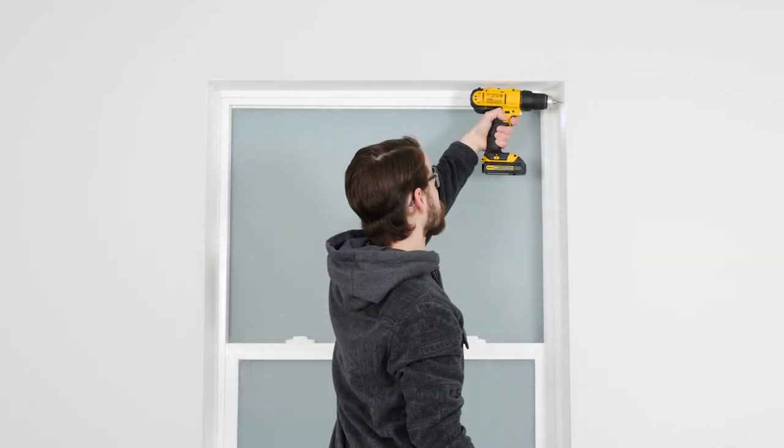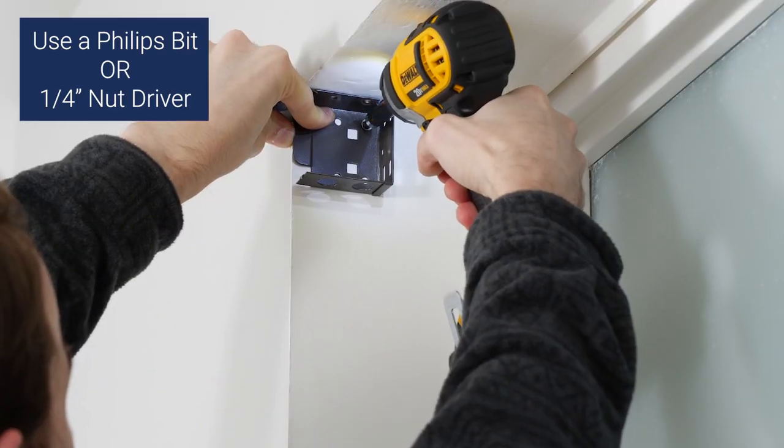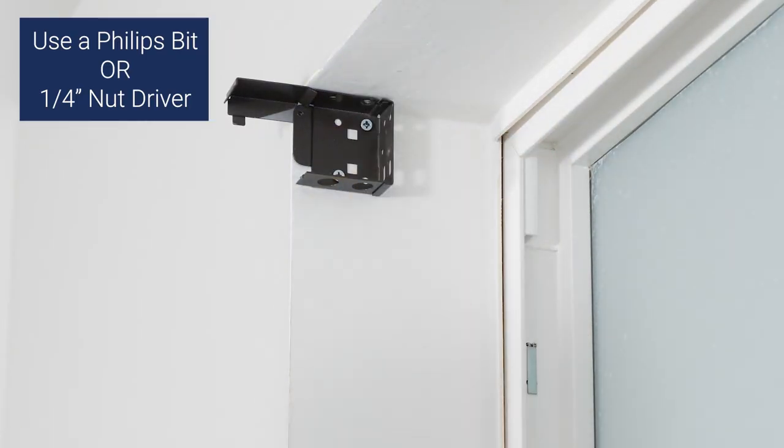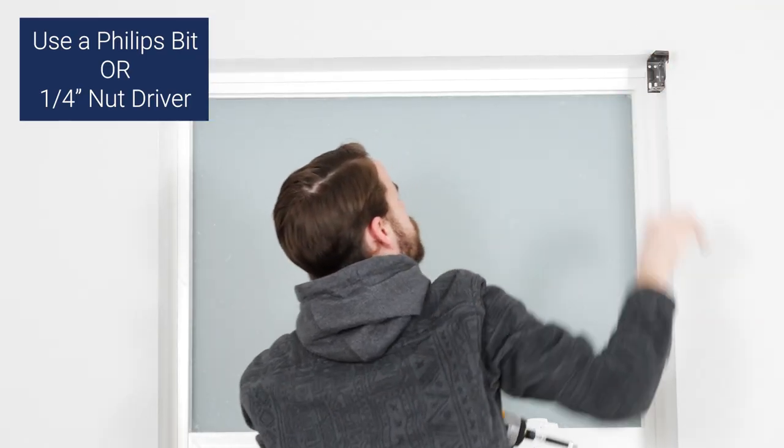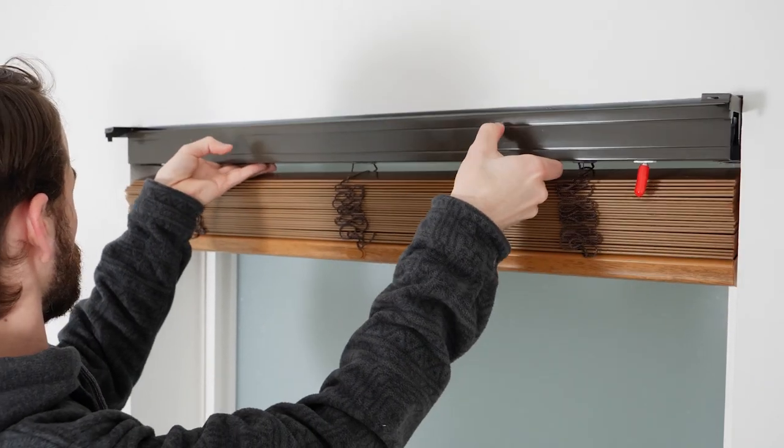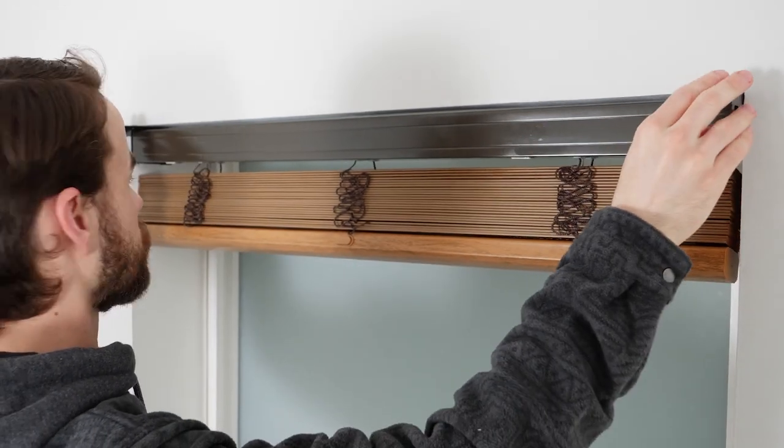Pre-drill the holes and screw the brackets into place. Slide the headrail into the brackets and close the hinges like this.